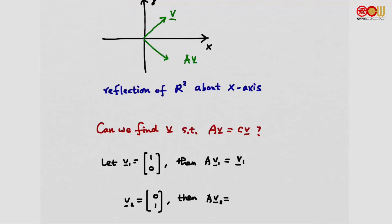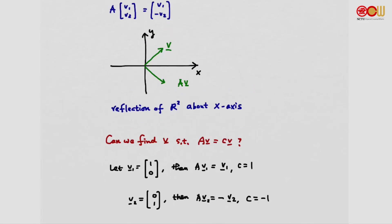As another example, suppose V2 is equal to (0, 1), the other standard vector of R2. Then AV2 is minus V2. So this is another example of AV equal to CV, and C, the scalar in this case, is equal to minus 1. In this case, V1 and V2 are what we call eigenvectors of A, and these scalars C are called eigenvalues.